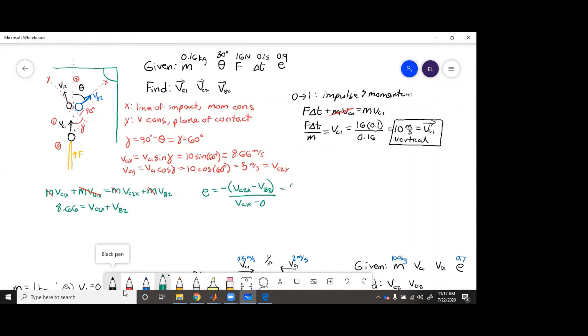So this equals 0.9, which equals negative vc2x plus vb2 over 8.66. So then 7.8 plus vc2x equals vb2.